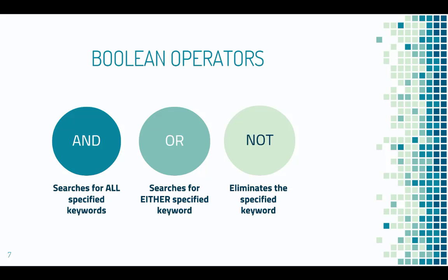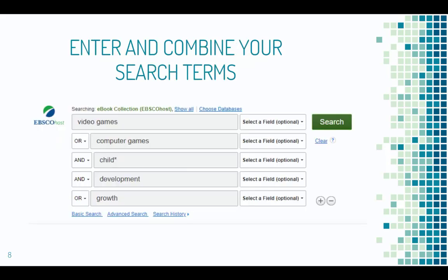Enter your key terms and play around with different combinations as they may generate different results. As an example, I could start off my search using the following combination: video games OR computer games, AND child* — where the asterisk is a truncation symbol to facilitate searching for various endings to the base word — AND development OR growth.